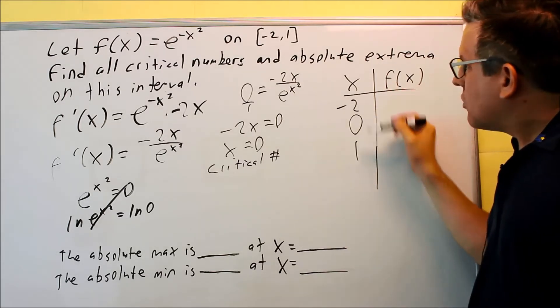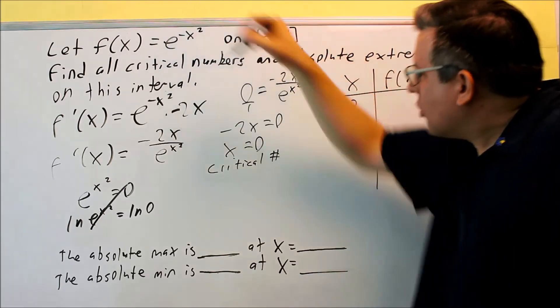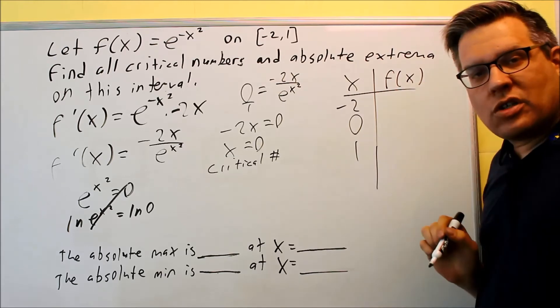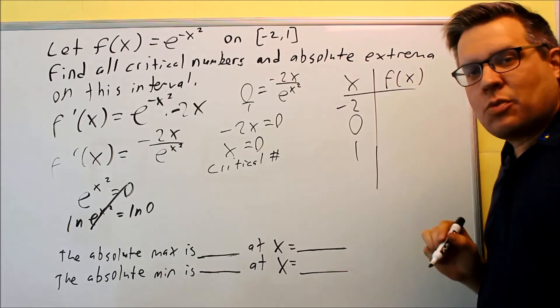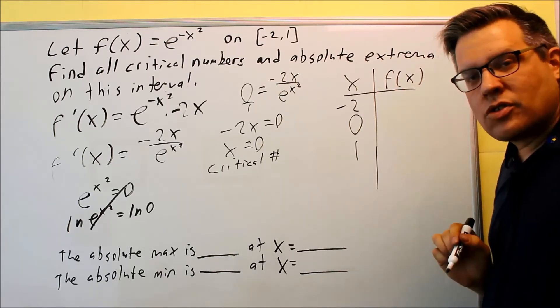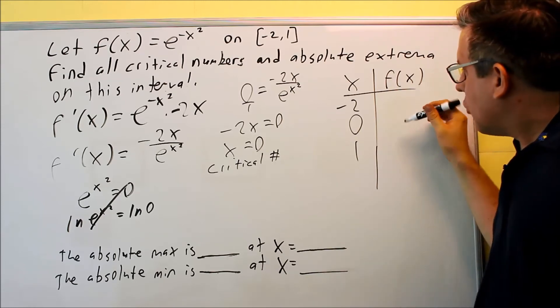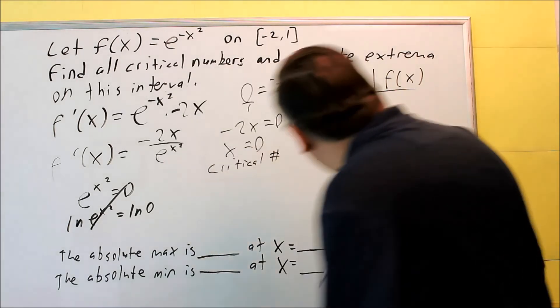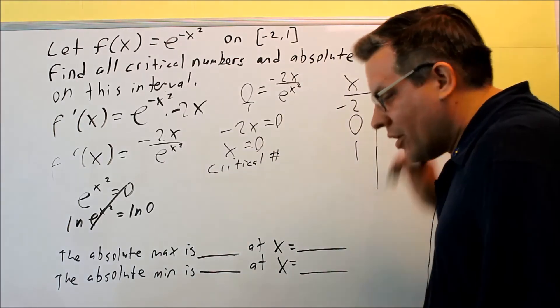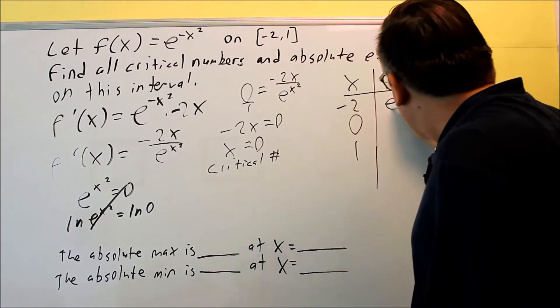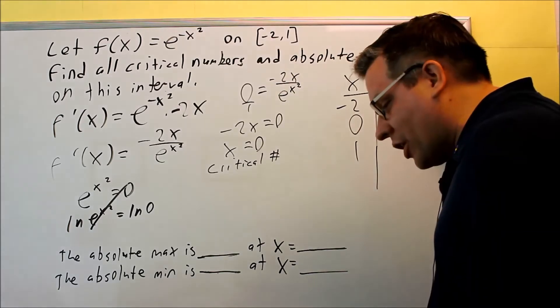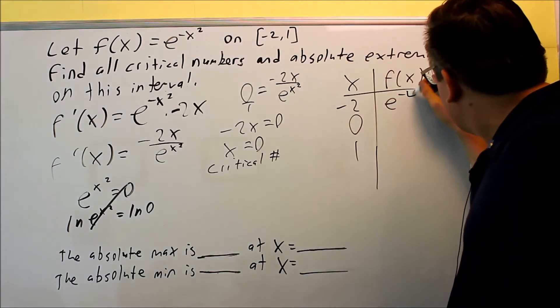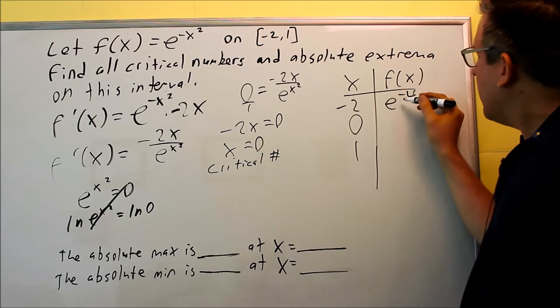Next, you're going to put all these values into the original one, and you're going to evaluate those here. And again, we can use decimals here, so we can easily compare the results. And once we do that, we'll be able to tell what the absolute maximum is going to be. Okay, so let's do that. When we put that in here, we're going to get, now I'll first start by putting in the exact value. Negative 2, I'll get e to the negative 4.